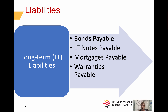Long-term liabilities are those that have a maturity date beyond one year or operating cycle, whichever is longer, and include bonds payable, long-term notes payable, mortgages payable, and warranty payables. You will want to review FASB's accounting standard codification numbers 405 and 470.